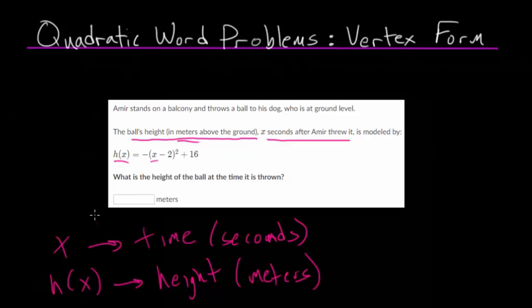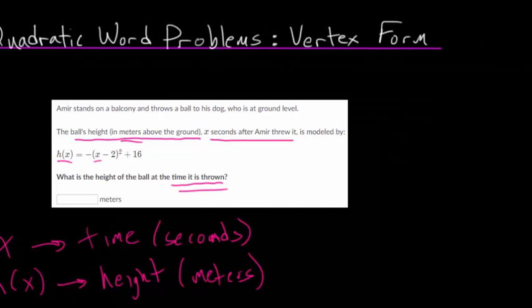Now once we understand the variables, and we've seen the equation, now we can go straight to the question, what is the height of the ball at the time it is thrown? So with these problems, you're going to come up with three basic scenarios.